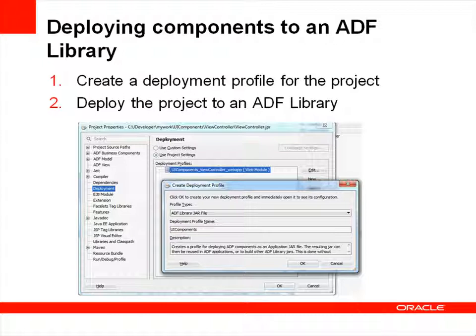So let's learn how to package reusable components into an ADF library. First, you create a deployment profile for the project. The deployment profile specifies the archive ADF type, the name of the jar file, and the directory path where the jar will be created. After creating the deployment profile, you use the deployment wizard to deploy the project to an ADF library. Note that a project corresponds to a single ADF library jar. If you create multiple projects and want to reuse components from each, you need to create an ADF library jar for each project.